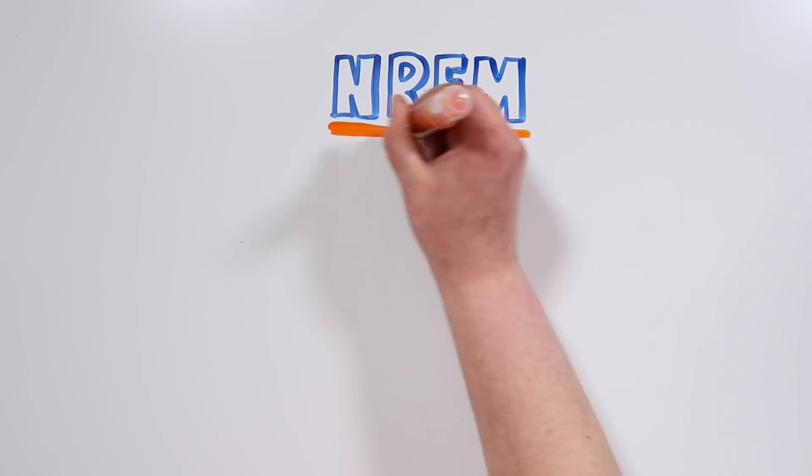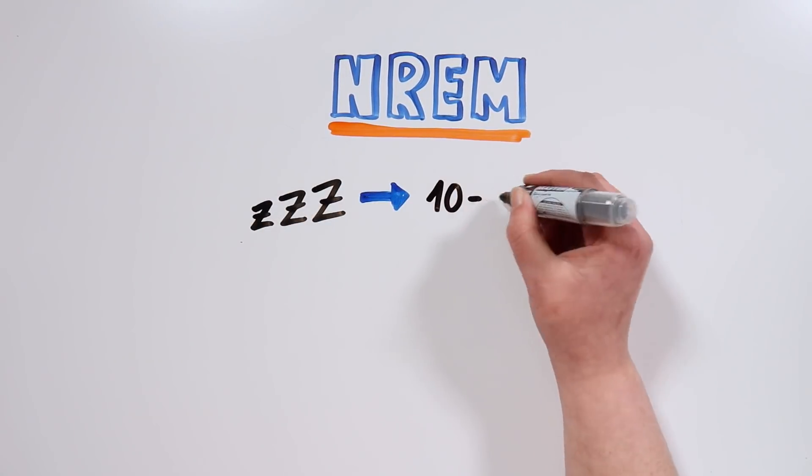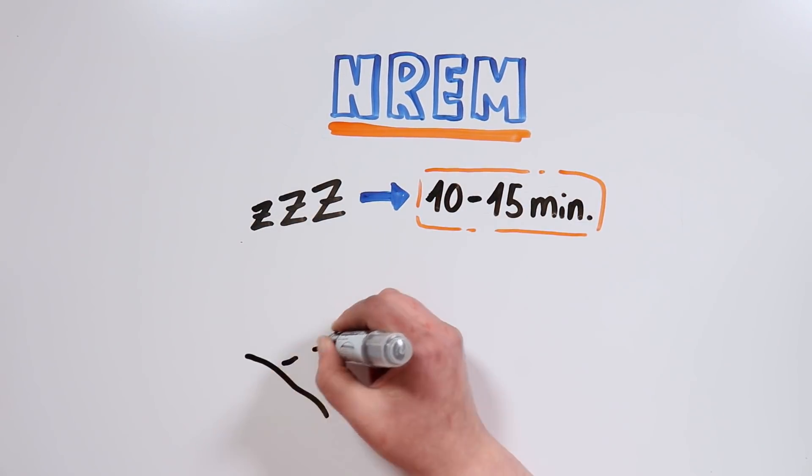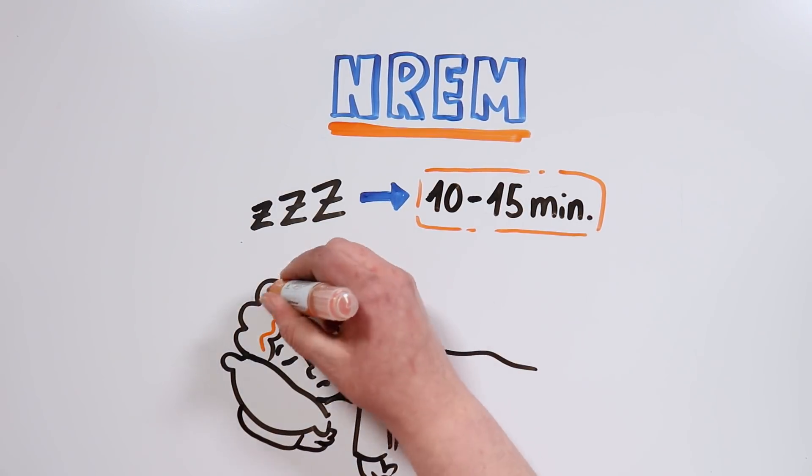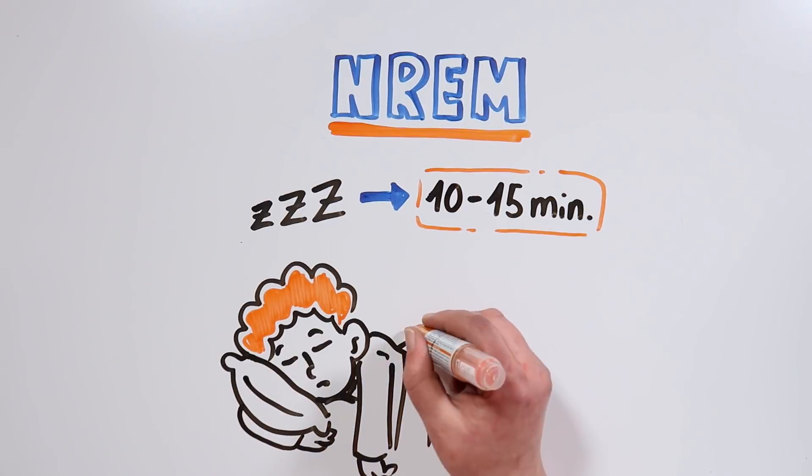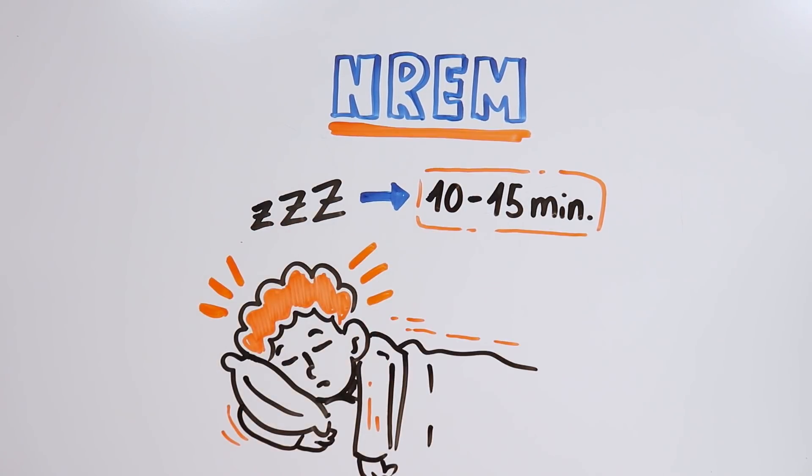Within each NREM phase, first we experience the initial stage of sleep, which can last between 5 to 10 minutes. In this stage, it is still pretty easy to wake up, our muscles relax almost completely, and our brain activity decreases.